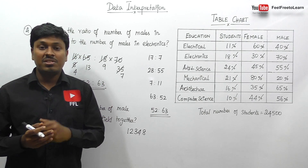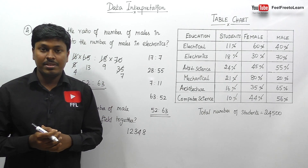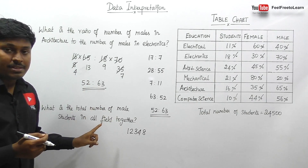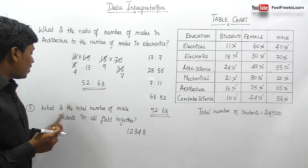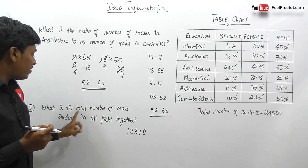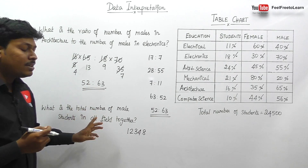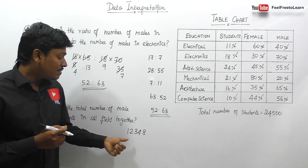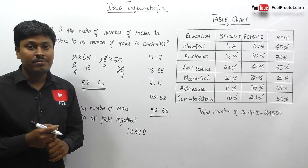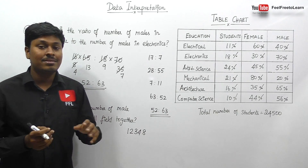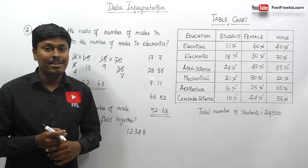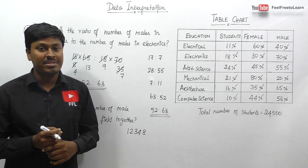After solving all four questions, don't forget to solve question 5 yourself: what is the total number of male students in all the fields together? The answer options include 1, 2, 3, 4, and 8. Don't forget to watch all the remaining data interpretation questions.